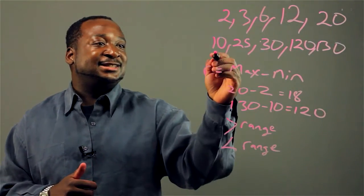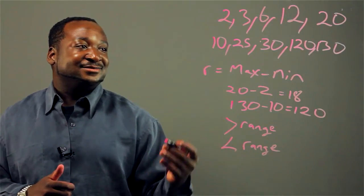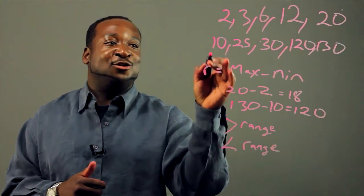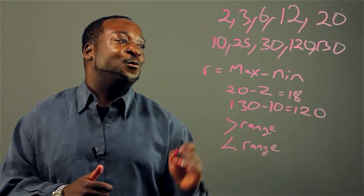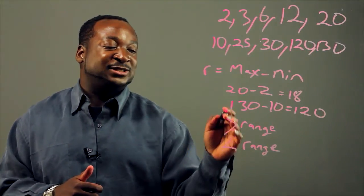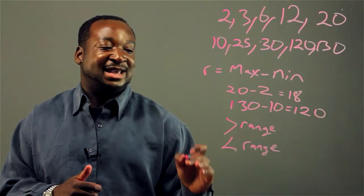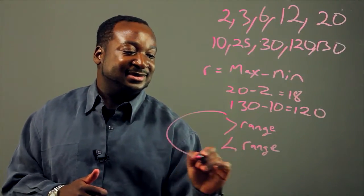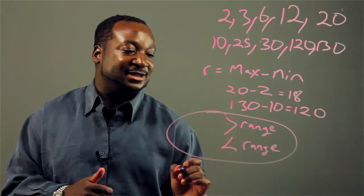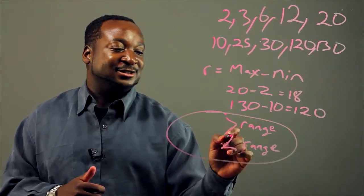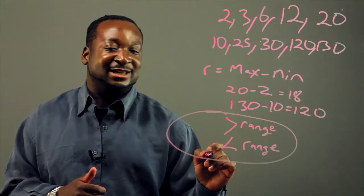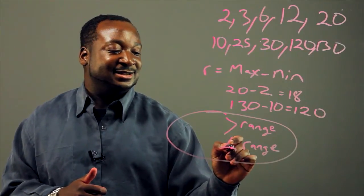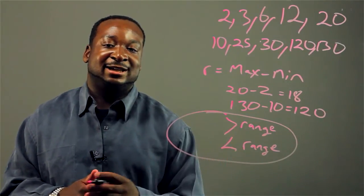But for data set 2, it'll be a nightmare if I go by 5 because it goes all the way up to 130. So I always find the range and I go by this simple pattern here. The greater the range, the greater the interval, and the lower the range, the lower the interval.